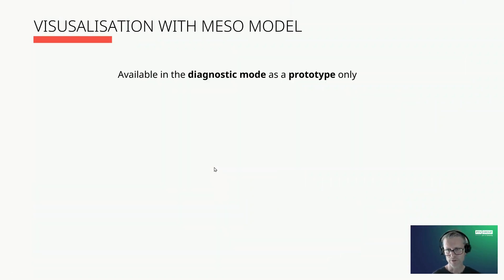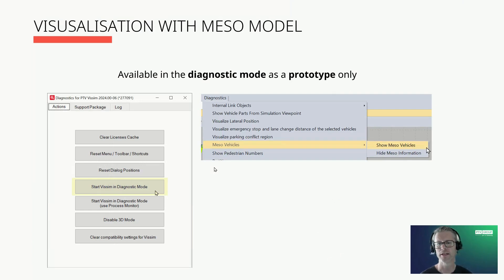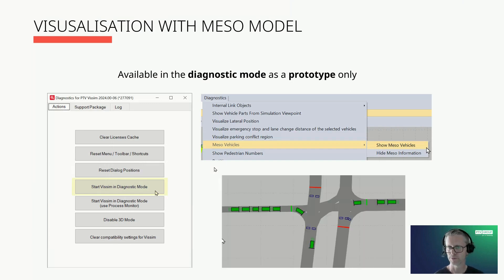In general, VISSIM does not visualize the meso vehicles, but there is a way how to show them for debugging purposes. You can start VISSIM in the diagnostic mode and switch on the visualization of the meso vehicles. Please note that this functionality is available as a prototype only, so the visualization is not perfect, but it gives you an indication if the model runs as expected or there is a problem.